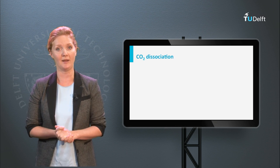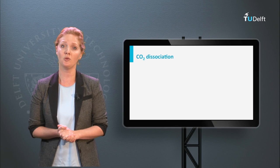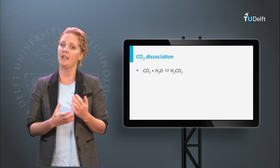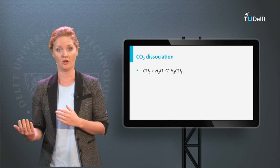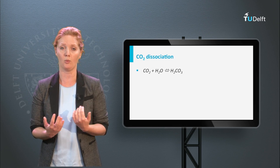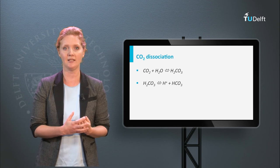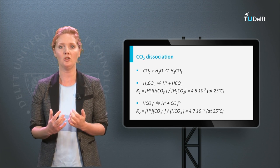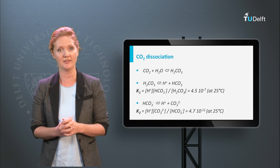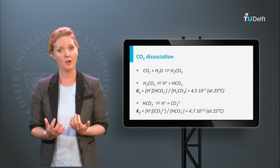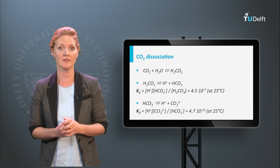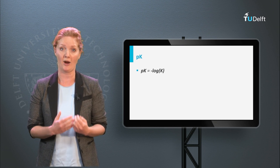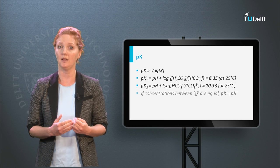The most important acid-base reaction in water is related to the dissociation of carbon dioxide. This reaction takes a few seconds to complete. In practice, carbonic acid and carbon dioxide are considered identical and used as equivalents. The dissociation continues from carbonic acid to bicarbonate, as depicted in the slide. From these equilibrium formulas it can be calculated which ionic forms of carbon dioxide are present at a certain pH value. For this purpose, it is convenient to rewrite the formulas in the pK form. pK equals the pH if the concentrations between brackets are equal, because log 1 equals 0.